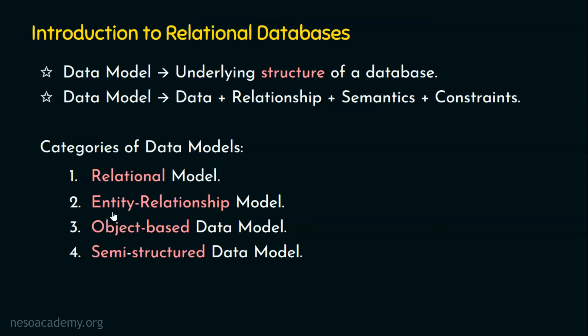We have seen the various categories of data models: the relational model, the entity relationship model, the object-based data model and the semi-structured data model. In this chapter, we are going to exclusively focus on relational databases, which follow the relational model.